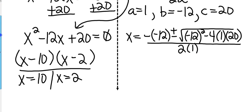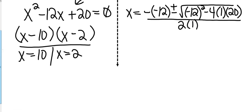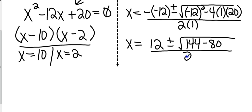Let me scroll down and give me a little bit of room to work. Now let's simplify it. I get negative and negative 12, which is 12, plus or minus. 12 squared, or negative 12 squared is 144. Negative 4 times 1 is negative 4. Negative 4 times 20 is negative 80, all over 2 times 1, which is 2. I should be able to clean it up here and get some factors.